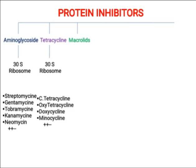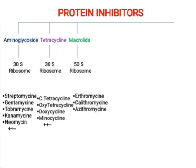We also have another group known as macrolides. Macrolides target the 50S ribosome. Examples of macrolides include erythromycin, clarithromycin, azithromycin, and roxithromycin. Their spectrum covers both gram-positive and gram-negative bacteria, but their activity is greater against gram-positive than gram-negative bacteria.